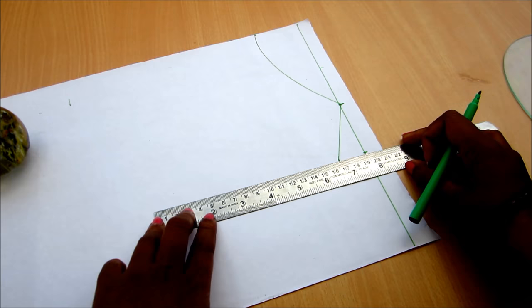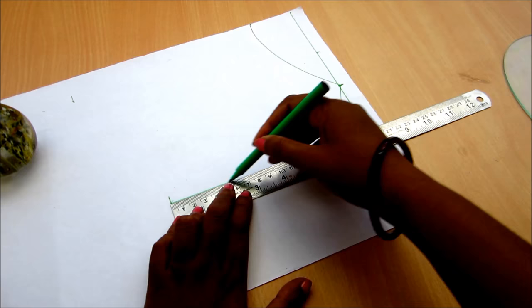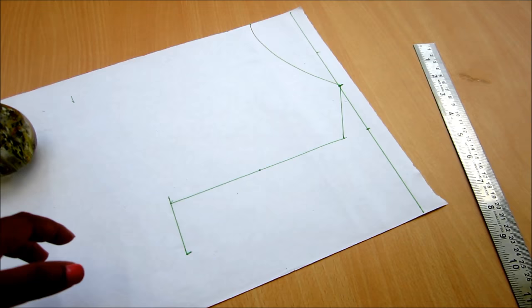Mark the armhole length of six and a half inches, chest line nine and a half inches. Connect all these points, taking note that I'm marking the quarter part of the body measurements. Mark the midpoint on the armhole, connect the chest line in the midpoint of the armhole with the curved line.